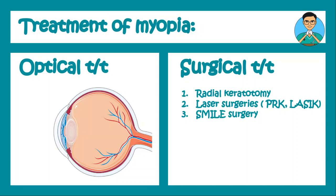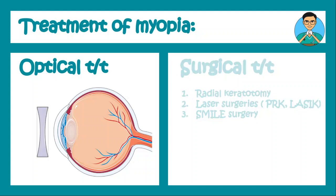Treatment of myopia includes optical treatment as well as surgical treatment. Surgical treatments include radial keratotomy, laser surgeries like PRK and LASIK, or modern surgeries like SMILE surgery. The surgeries of myopia are very detailed and demand a separate video, so we will discuss them in a different video.